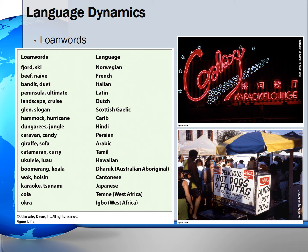Languages change over time and from one place to another. Often, these changes utilize loanwords, which are words that originate in one language and are incorporated into the vocabulary of another language. The chart on the left shows a list of popular loanwords and where they originated. The photo on the top is an example of the borrowed word karaoke, and the bottom photo shows the diffusion of ethnic foods such as fajitas. These both are prime examples of linguistic borrowing.